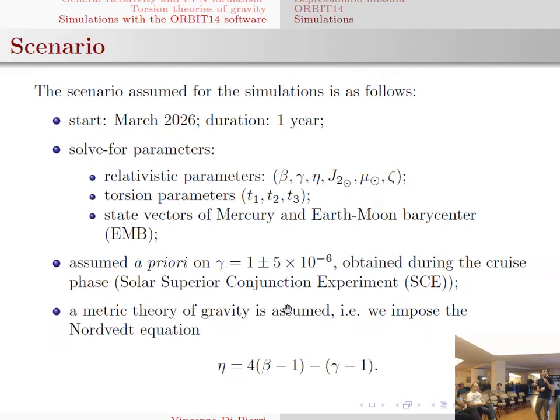The scenario and assumptions for the simulation: I simulated a one-year-long mission starting from March 2026. I included in the solve-for list the relativistic parameters beta, gamma, and eta (the Nordtvedt parameter), and three Sun's parameters: J2, mu (the gravitational mass of the Sun), and zeta (its time derivative). I also included the torsion parameters introduced before, and the state vector of Mercury and the Earth-Moon barycenter. I assumed an a priori gamma to be obtained during the cruise phase of the mission, and the Nordtvedt equation where the parameter eta is related to beta and gamma.